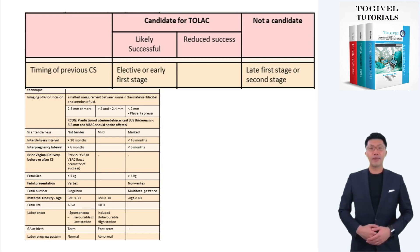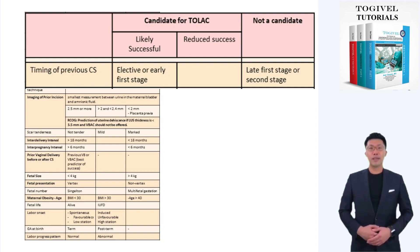The second factor is the timing of the previous CS. In a patient with no recurring indication, if the previous CS was done as an elective CS or early in labor, this means conditions at surgery were favorable and the lower uterine segment was not thinned out by the labor process — such a patient is a candidate for TOLAC. Conversely, a CS done late in the first stage or in the second stage, when the lower uterine segment is usually thin and healing may not be optimal, increases the incidence of scar dehiscence during TOLAC, and thus the patient is not considered a candidate.